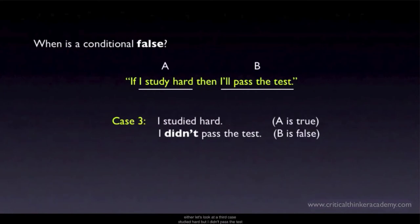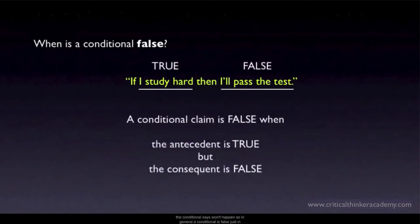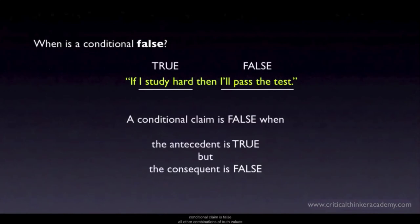Now let's look at a third case: I studied hard, but I didn't pass the test. Here the antecedent is true but the consequent is false. Under these conditions, could the conditional still be true? No, it can't. These are the conditions under which a conditional is false — when the antecedent is true but the consequent turns out to be false. If I studied hard and didn't pass, this is precisely what the conditional says won't happen. In general, a conditional is false just in case the antecedent is true and the consequent is false. This is the only case where we say with certainty that a conditional claim is false; all other combinations of truth values are consistent with the conditional being true.